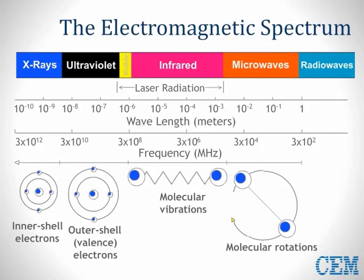To further understand how microwaves heat materials, let's look at the electromagnetic spectrum and specifically where microwaves are located on it. You will notice that microwaves are located in the low-energy spectrum area to the right, between IR and radio waves — a region that provides for molecular rotation interaction.